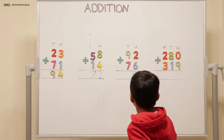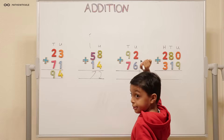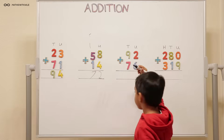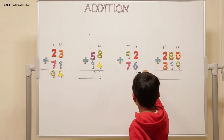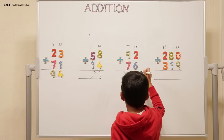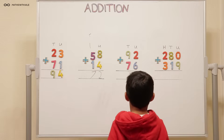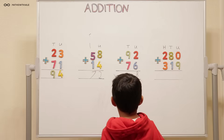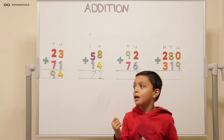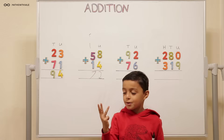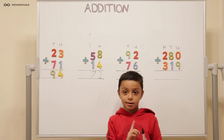So we're on to ninety-two plus seventy-six. So what are you going to do? Two plus six equals eight. And nine plus seven equals — nine, ten, eleven, twelve, thirteen, fourteen, fifteen, sixteen. Sixteen.